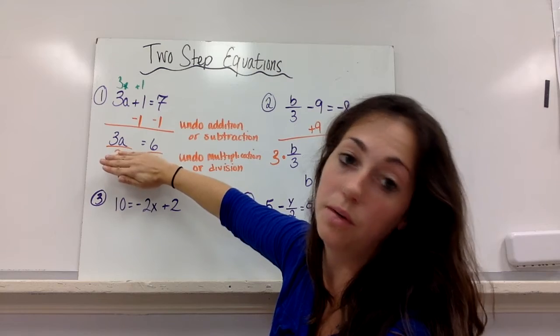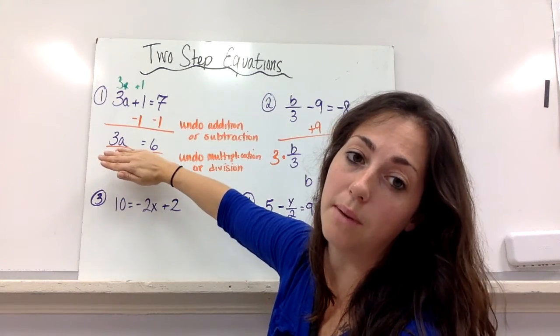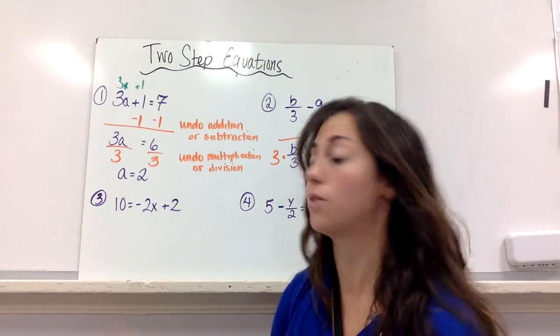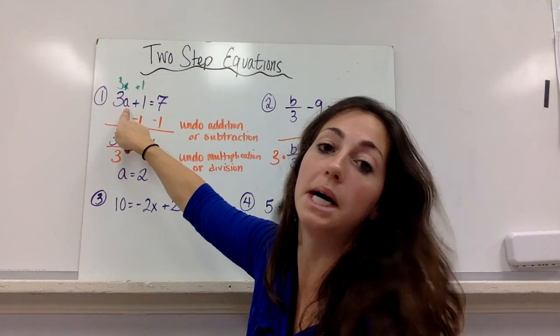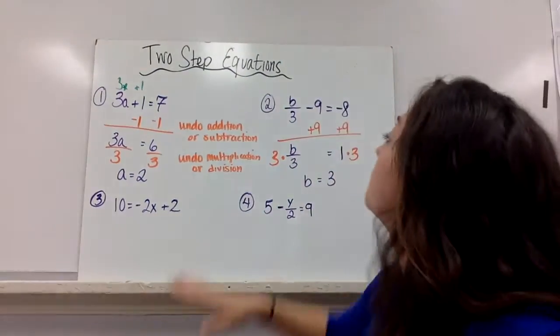Now I have to undo—this is step one. Undo the multiplication or division. So I divide by 3, and I get a equals 2, and that's my answer. If I plug it in, 3 times 2 is 6 plus 1 is 7. Works every time; there's only one answer.